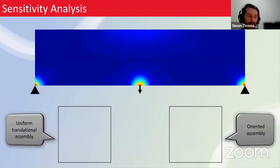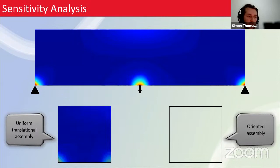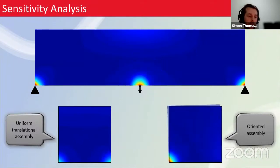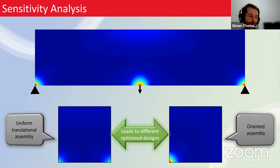To visualize the process: for traditional translational periodic optimization, we average sensitivities at each location to get a uniform translational sensitivity pattern. With an oriented arrangement, the regions of high sensitivity overlap neatly with one another. These different sensitivity patterns for the same unit cell lead to very different optimized designs and different optimized periodic macro structures.